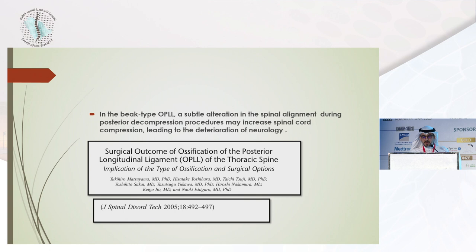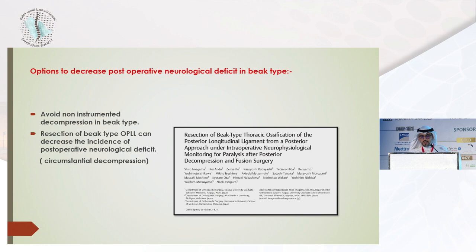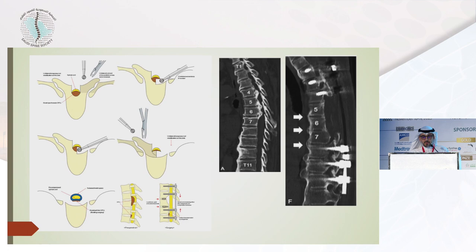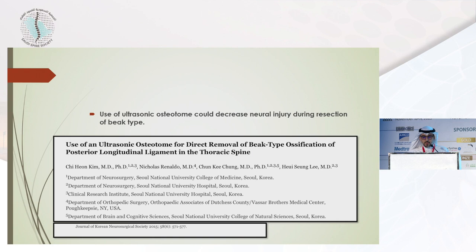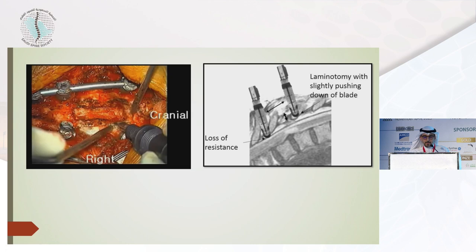We have to be careful of kyphosis during surgery — even a minimal increase in kyphosis may cause more damage. Options to decrease postoperative neurological deficit in beak type include: avoiding non-instrumented decompression, and resection of the beak type OPLL to decrease the incidence of postoperative neurological deficit via circumferential decompression. The technique involves posterior laminectomy and instrumentation first, then undercutting while keeping the floating portion attached to the dura. Use of an ultrasonic osteotome could decrease neural injury during resection.